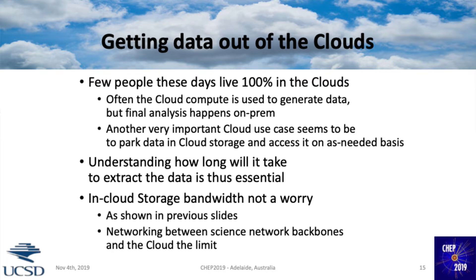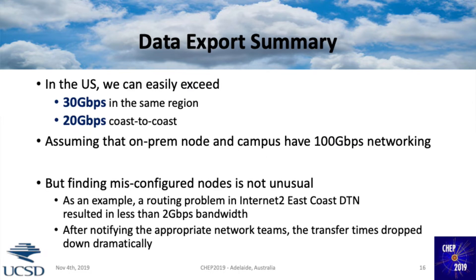What did I see when I tested this? At least in the US we get pretty good numbers — about 30 gigabits per second if you stay in the same region, and 20 gigabits per second coast to coast is pretty normal, assuming your own infrastructure can handle this. I had a node with a 100-gigabit NIC and 100 gigabits per second out of the campus, so that was not a problem. Just be careful that everything is actually set up well.